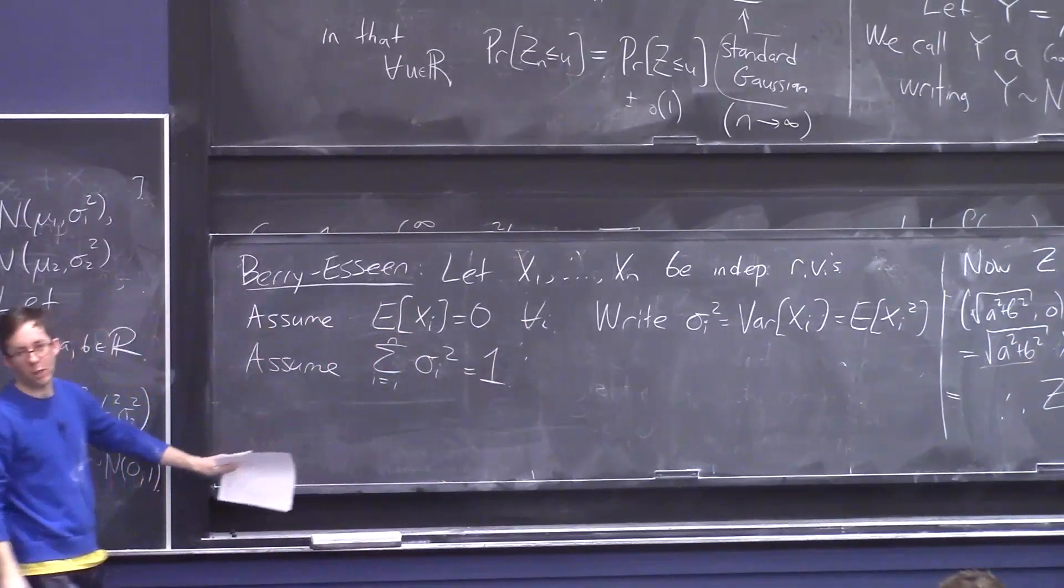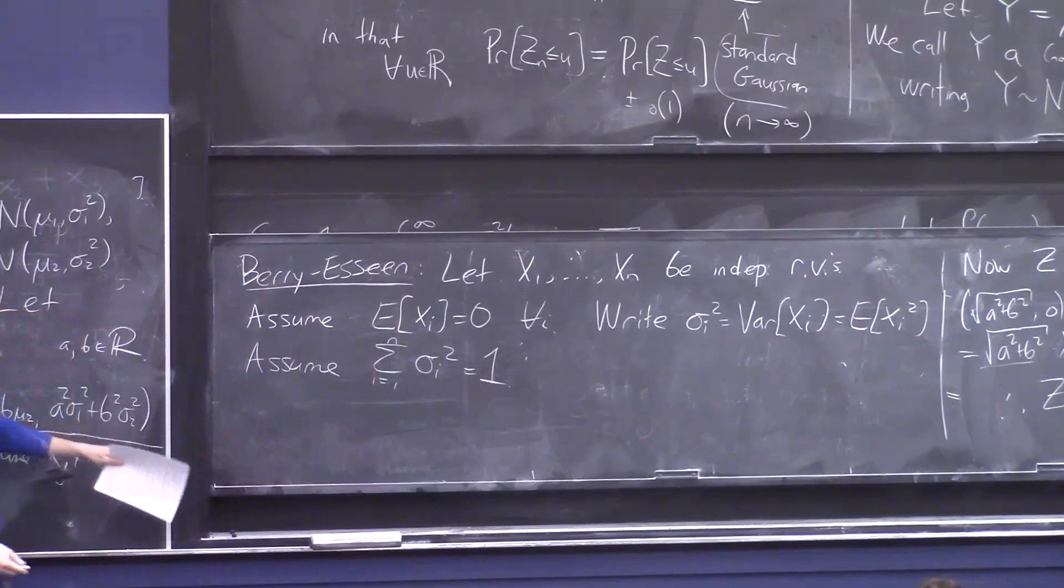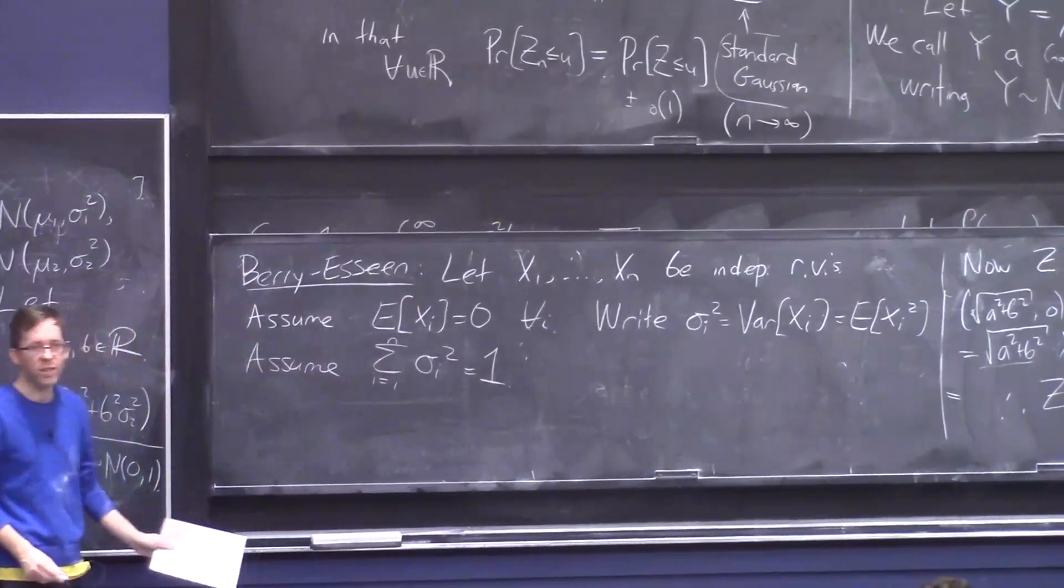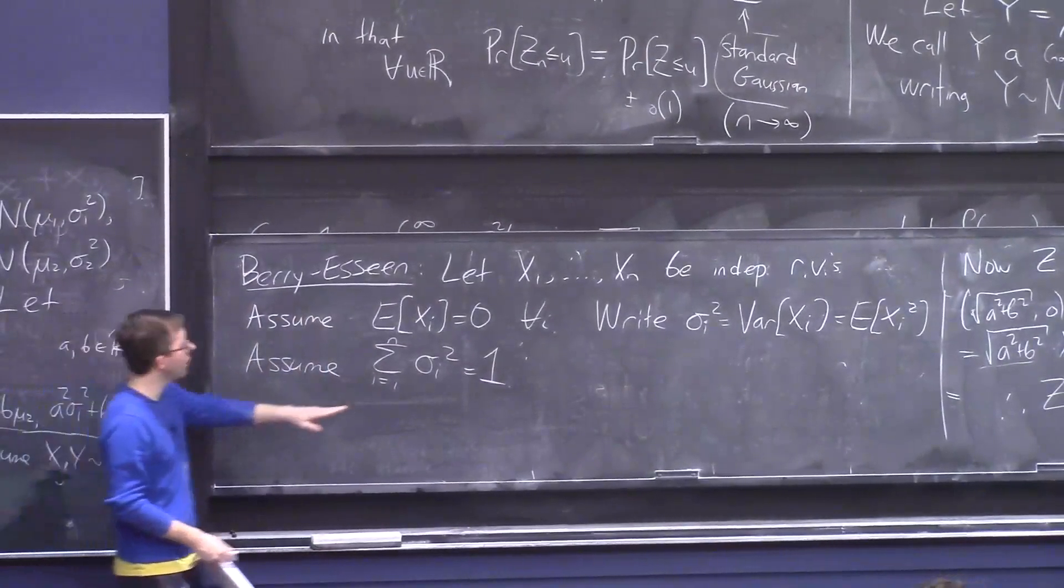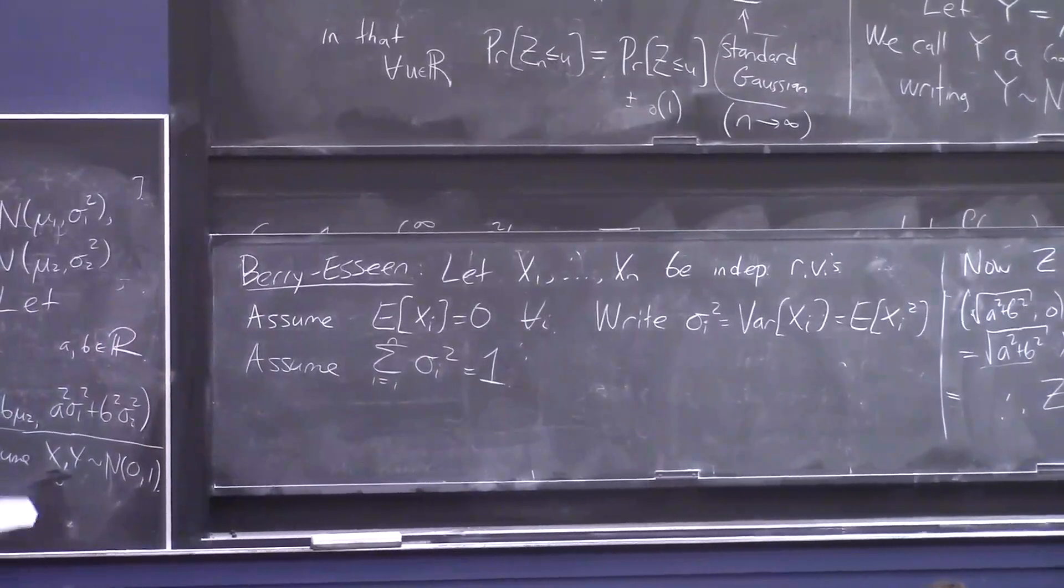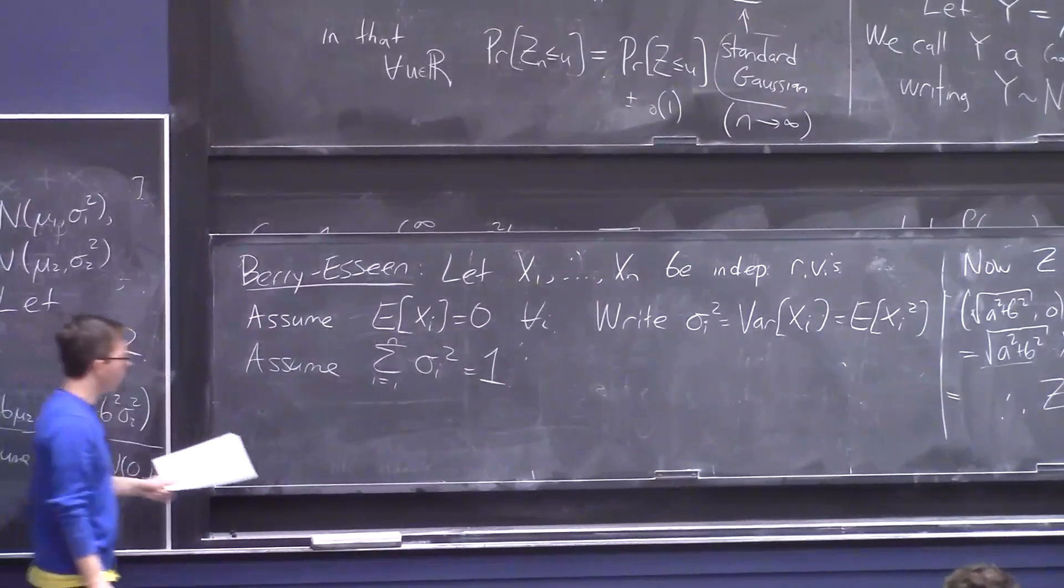And this is also without loss of generality, basically, because if it's not one, if it's like six, then just multiply all the random variables by one over square root six, and you'll achieve this thing, and you've basically not really changed your problem. Just multiply it by one over root six.